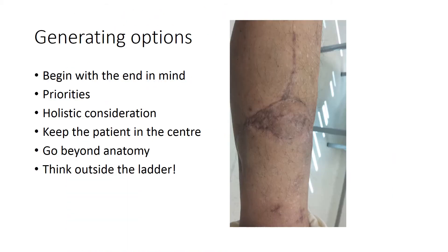In generating options, it is very important to begin with the end in mind. You must be very clear in what you hope to achieve at the end of your reconstruction. Priorities must be clear: skeletal stabilization, vascular continuity, soft tissue cover, and ensuring bony union. Holistic consideration must be made to ensure the patient understands the complex journey ahead to reach optimal outcome, and the patient must be at the center of all decision making. We need to go beyond anatomy and consider functional restoration — which is why one needs to think outside the ladder when generating options for reconstruction of the mangled lower limb.